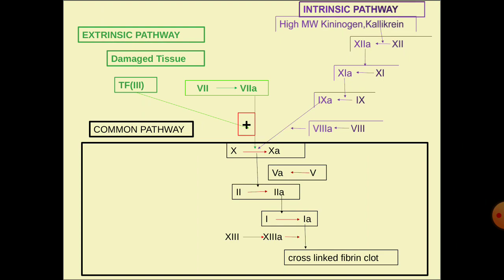Starting with the extrinsic pathway: following damage to the blood vessel, factor 7 leaves the circulation and comes in contact with tissue factor, which is expressed on tissue factor-bearing cells — those are stromal fibroblasts and leukocytes. These form an activated complex, the tissue factor–factor 7a complex, which activates factor 10 to factor 10a. From here, the common pathway starts.